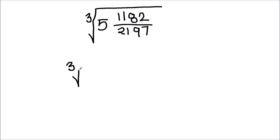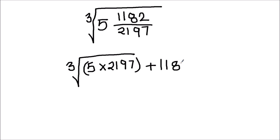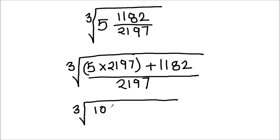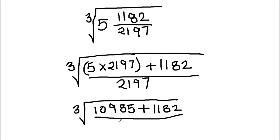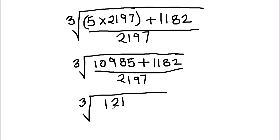So let's do that first. That's going to be 5 times 2197 plus 1182, divided by 2197. This gives us 10,985 plus 1182 divided by 2197. When we add these two we get 12167 divided by 2197.